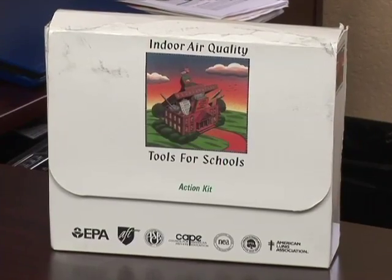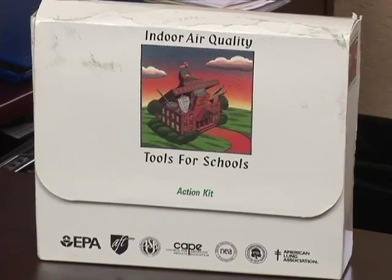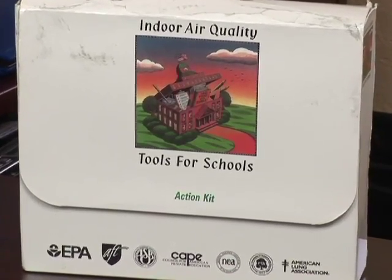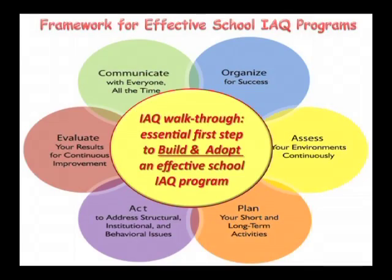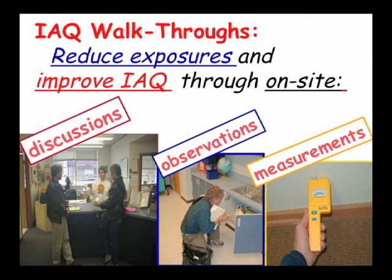The Environmental Protection Agency's indoor air quality tools for schools program has outlined a six-element framework for effective school IAQ programs. You'll see that the walkthrough evaluation is a key component to be accomplished early on in the process of building and adopting your school IAQ program. Ultimately, walkthroughs involve the on-site communication, observations, and measurements necessary to plan improvements for IAQ and result in healthier air for staff and students.